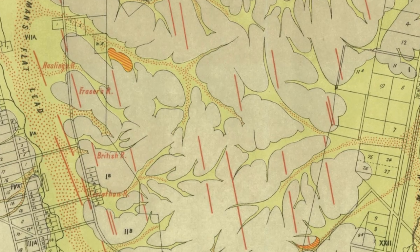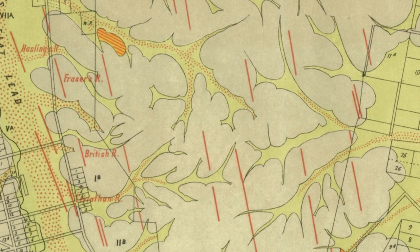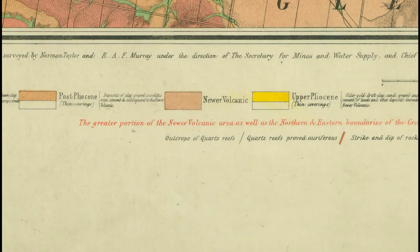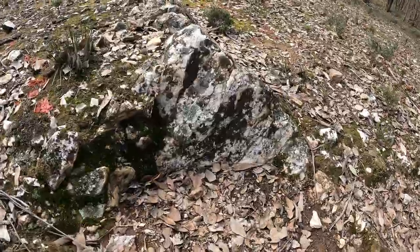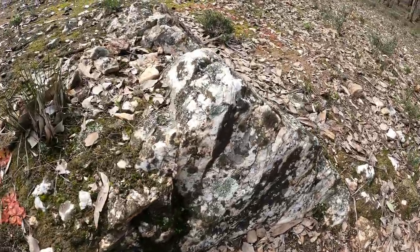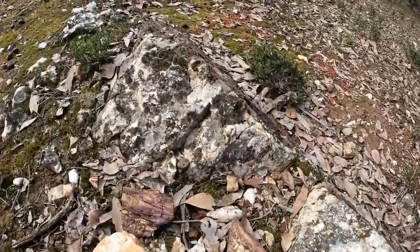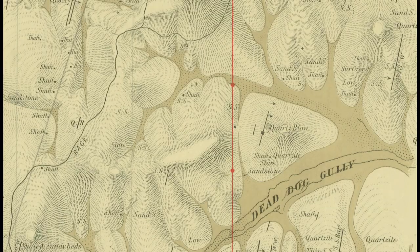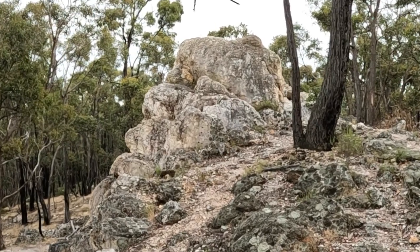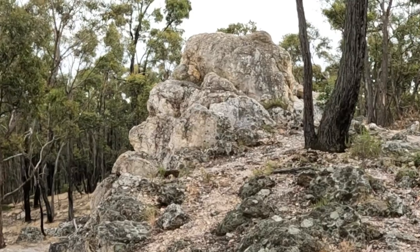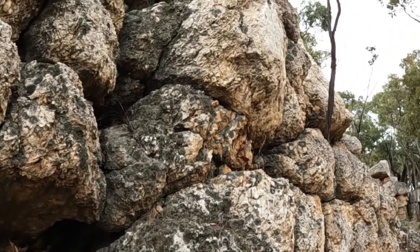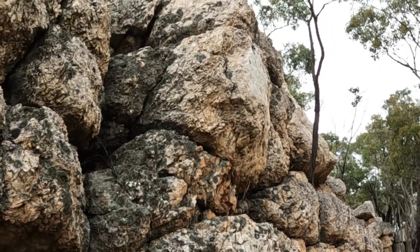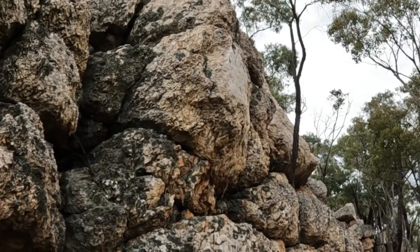Usually reefs are just marked as reefs and are typically shown by straight lines. You will also see some reefs marked as outcrops, which means that the reef is exposed at the surface by erosion of the surrounding rock, rather than lying hidden underground. Some are also marked as quartz blows — these are huge masses of quartz which have been exposed at the surface. There is an incredible example of this at Liliker, at the Quartz Mountain Geological Reserve.